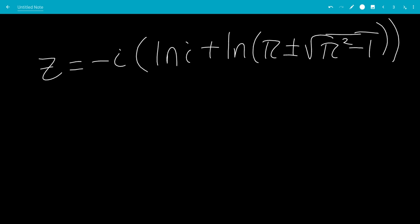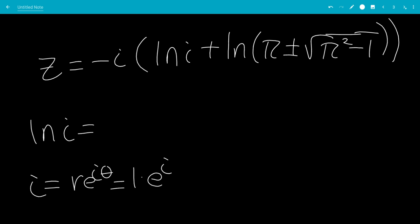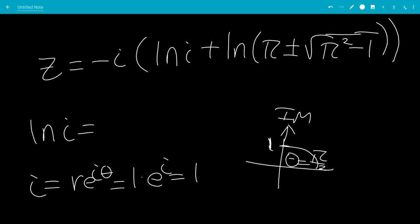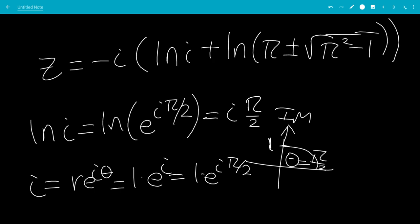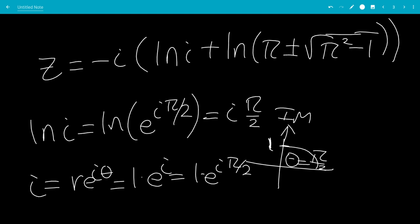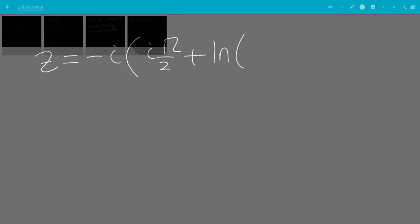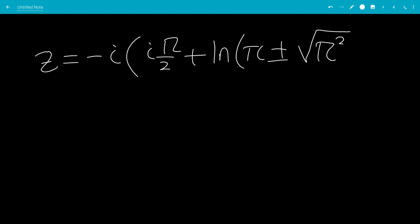So ln of i — since i is r e to the i theta, where r is obviously 1, and i lies on the imaginary axis at angle pi over 2, so i equals 1 times e to the i pi over 2. Therefore ln of i equals i pi over 2. So we have z equals negative i times ln(i), which is i pi over 2, plus the natural log of pi plus or minus square root of pi squared minus 1.